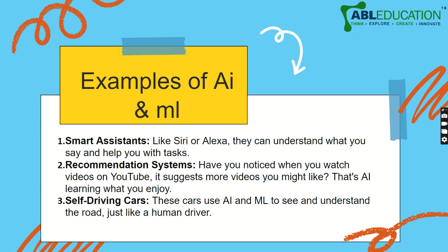Some examples of AI and ML are smart assistants like Siri or Alexa — some of you may use Alexa at home, and iPhone users are familiar with Siri. There are also recommendation systems: whenever you watch a video on YouTube, the system automatically suggests similar videos. And self-driving cars — Tesla is already developing them. In the near future, self-driving cars will be a lot more common, thanks to AI and ML.